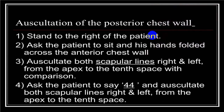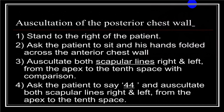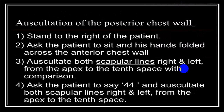We also auscultate the anterior wall of the chest, going from the supraclavicular fossa downward, comparing right with left, always moving from above downwards. The same is done in the axillary area and then repeated on the posterior wall — always comparing identical areas on both sides.